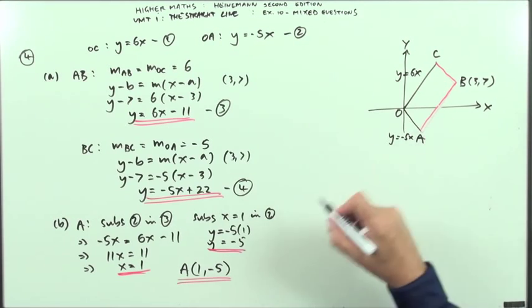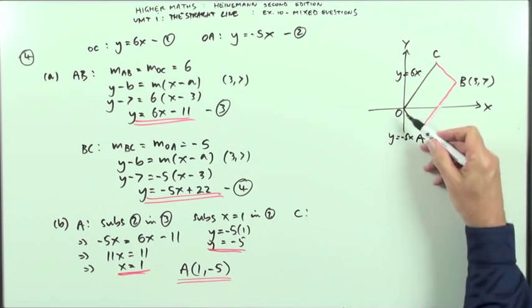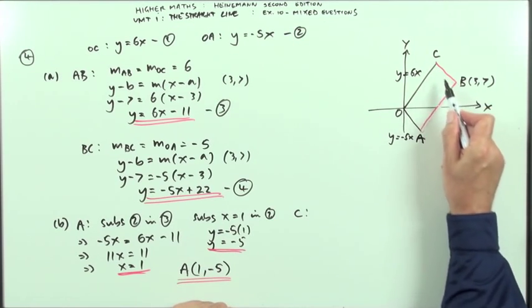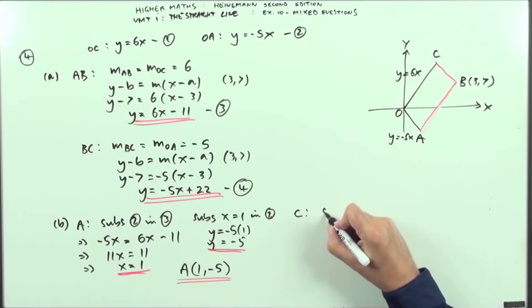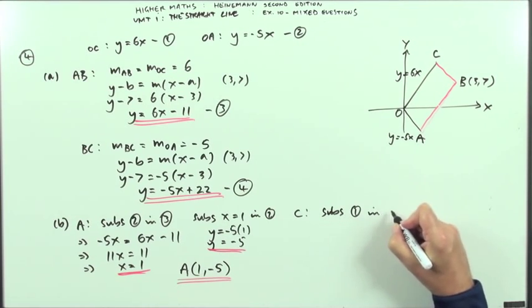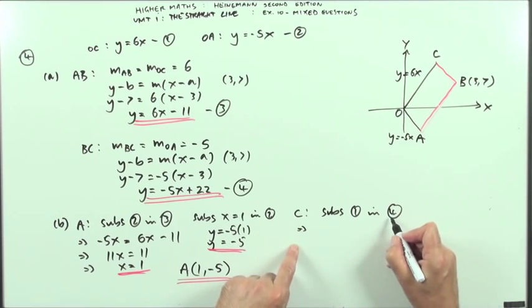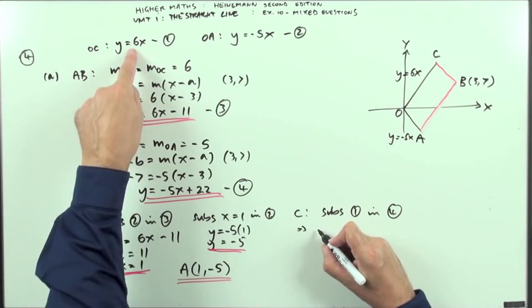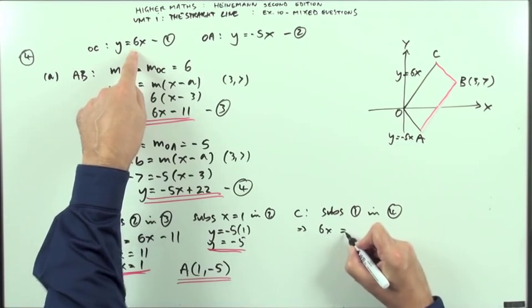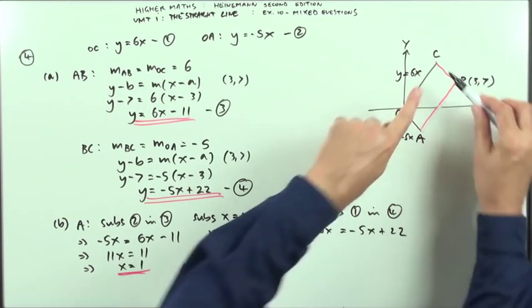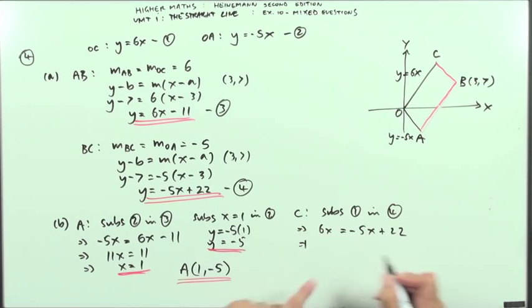C is where these two lines cross, so that's the line I've called 1 and the line that I worked out here which is 4. So substitute 1 into 4. Instead of Y I'm going to write 6X equals negative 5X plus 22. 11X is 22, divide it out, X is 2.